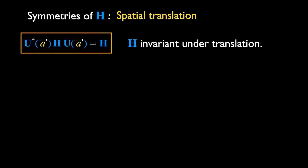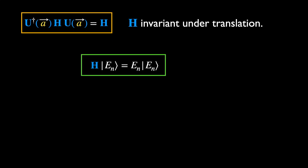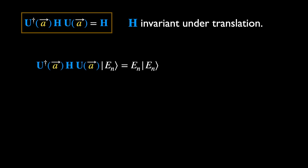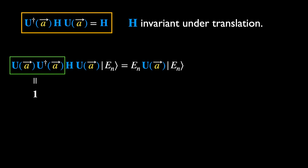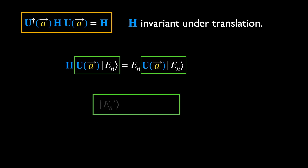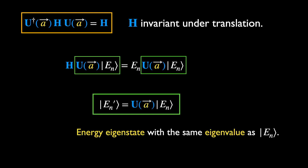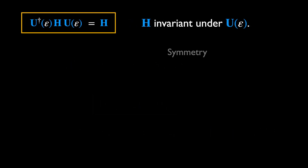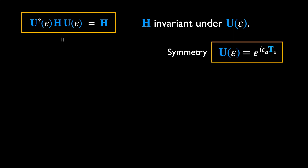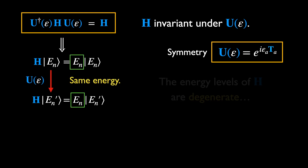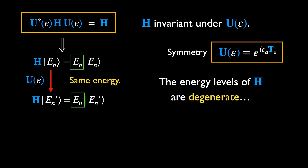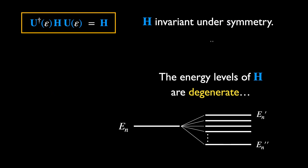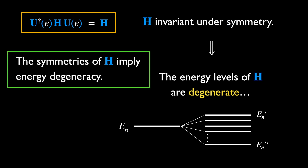Let's look at the implications of the invariance of H on the energy eigenstates. We find that the state obtained by applying the translation operator on the eigenstate |E_n⟩ gives another eigenstate with the same energy. The same argument applies to any symmetry the Hamiltonian might possess. This means symmetries of H imply that its energy levels are degenerate — more than one state can share the same energy. Applying U with different parameters on an eigenstate might generate further distinguishable states with the same energy, leading to multiple degeneracies.